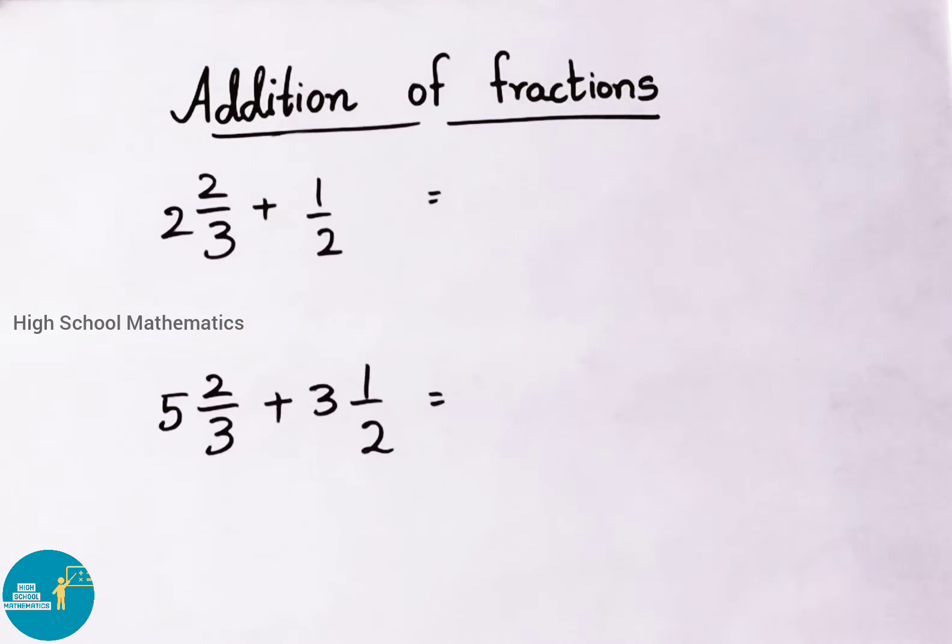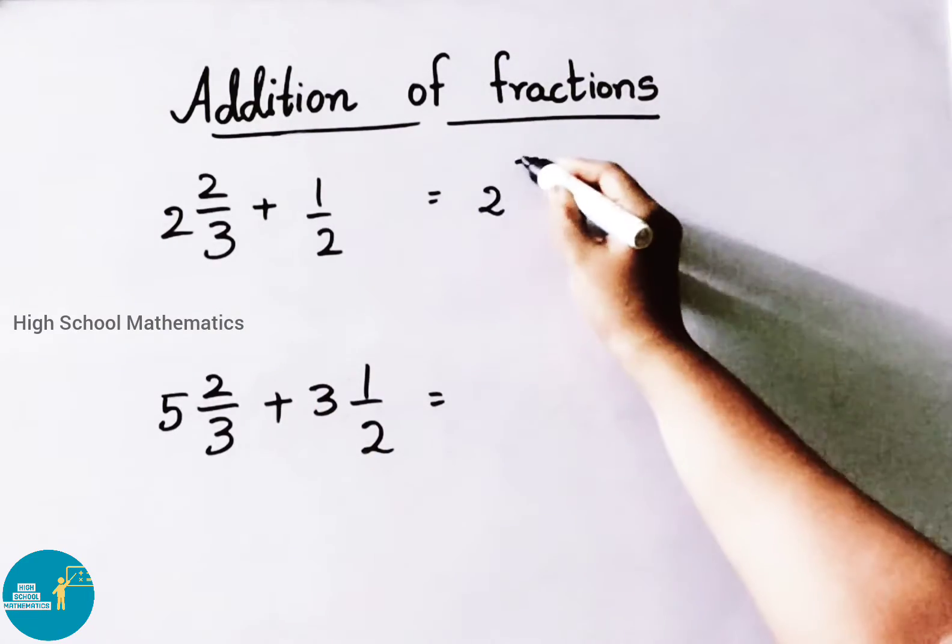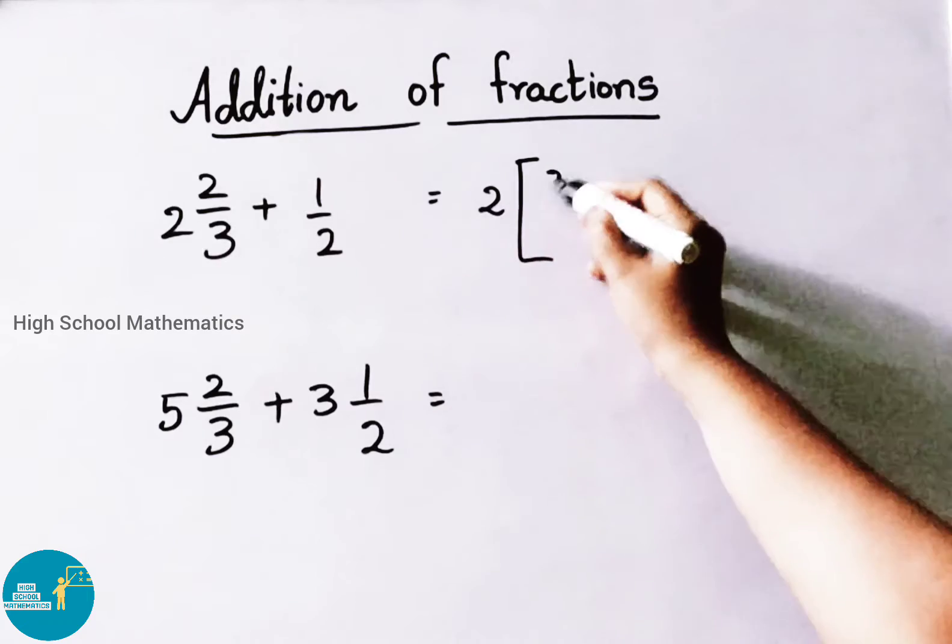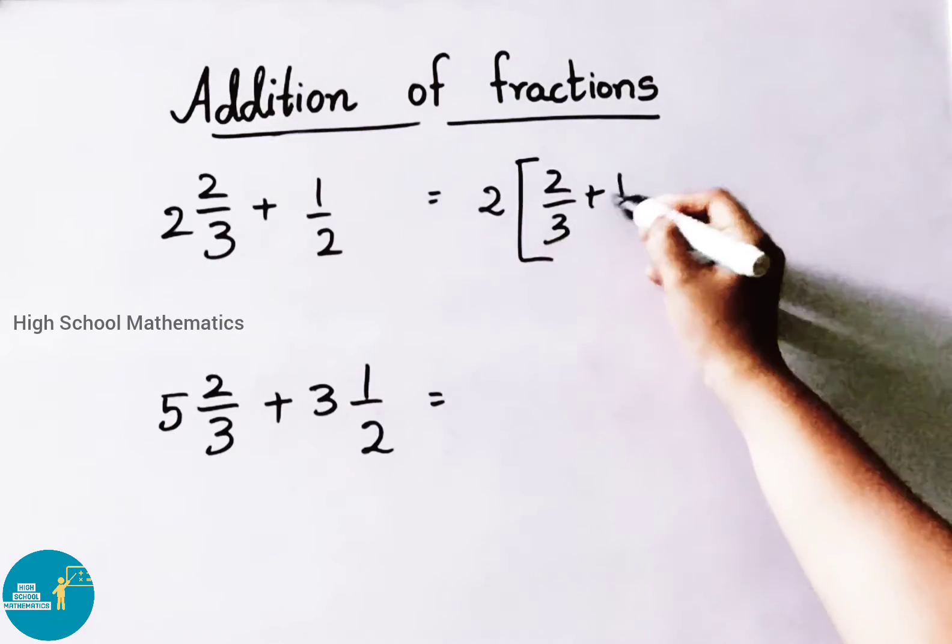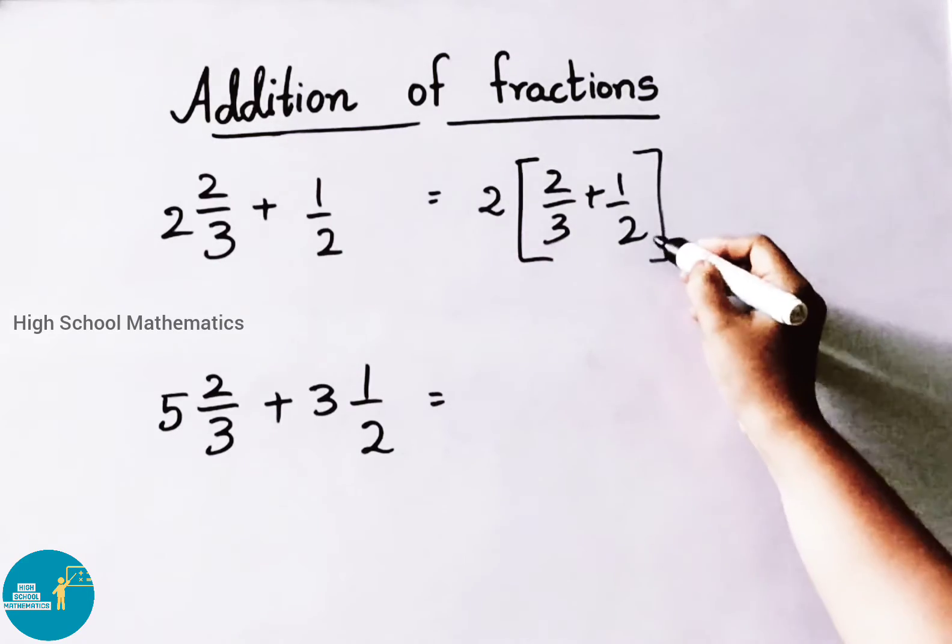See now another example. 2 and 2 by 3 plus 1 by 2. Write down these 2 separately. And let us take these fractions. 2 by 3 plus 1 by 2. Now let us do cross multiply.